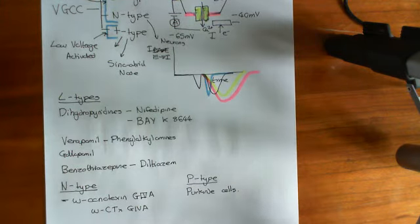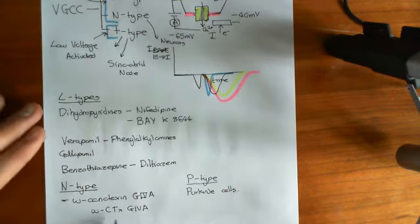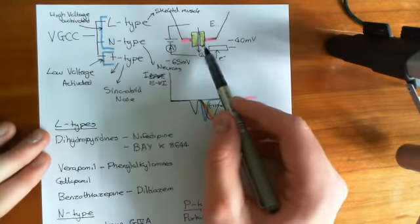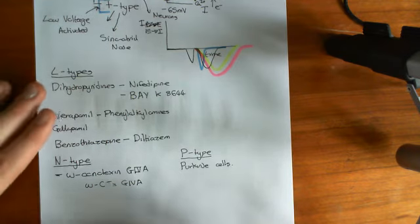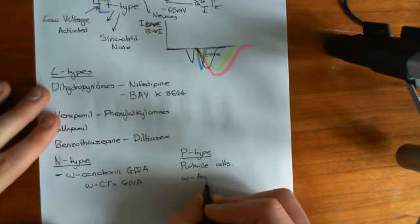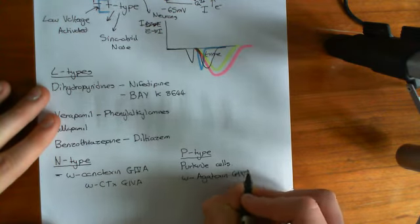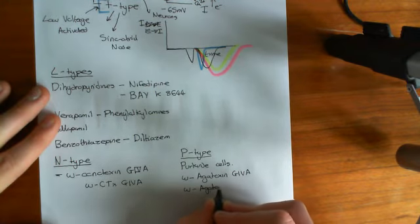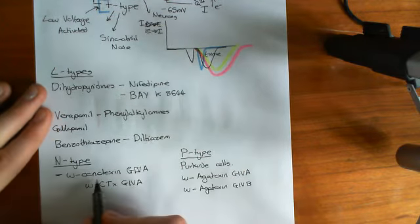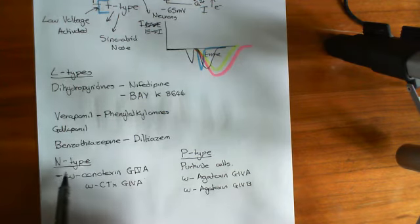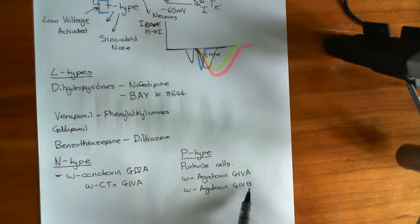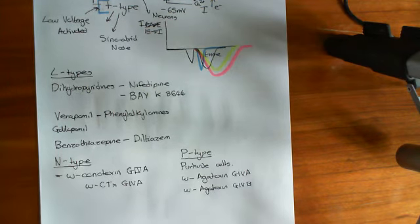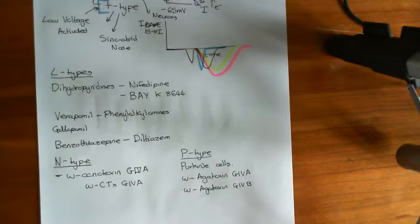For P-type calcium channels, the agent is different. Omega-conotoxin G6A is ineffective against these P-type channels. So if you go to a Purkinje cell and try to block it with omega-conotoxin G6A, it doesn't work. Instead, Purkinje cells are blocked by omega-agatoxin G6A and omega-agatoxin G6B — two pharmacological agents which are different from omega-conotoxin G6A. Omega-conotoxin G6A comes from fish-hunting snails, whereas omega-agatoxin G6A and G6B are found in spiders. That's why they're called toxins — they're naturally found and used in nature to incapacitate prey.